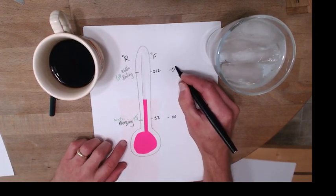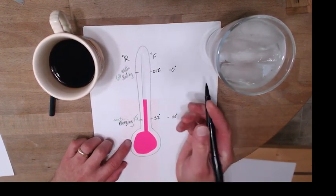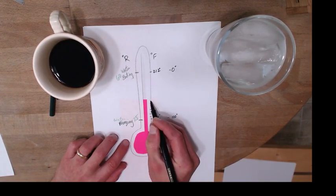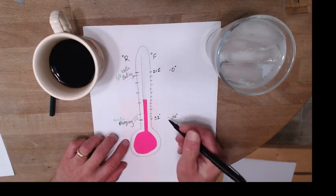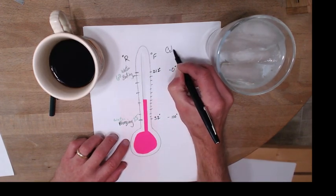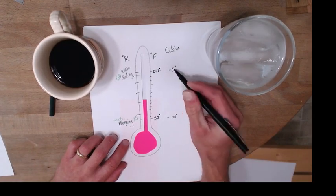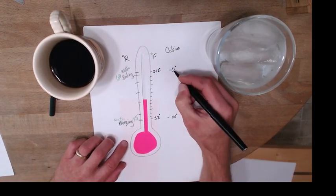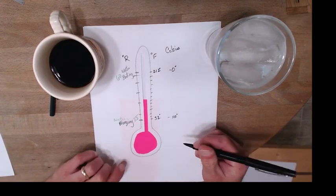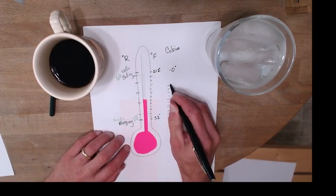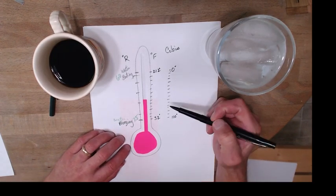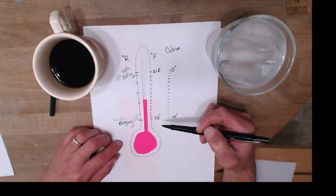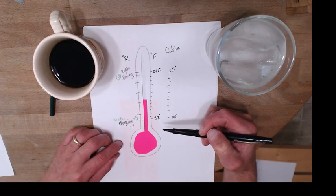So these are degrees because you're just putting little marks across here. Those marks can be as big as you want them to be. Anders Calcius said zero to 100, and he made zero water boiling and 100 water freezing, and said there needs to be a hundred pieces in between there. And everybody said, 'Anders, that doesn't make any sense,' and he said, 'It's my scale, I can do whatever I want.'